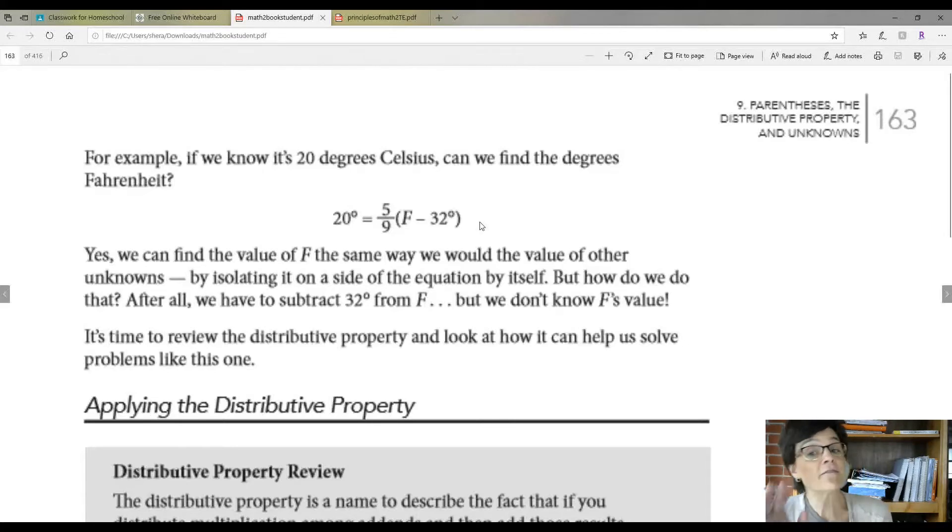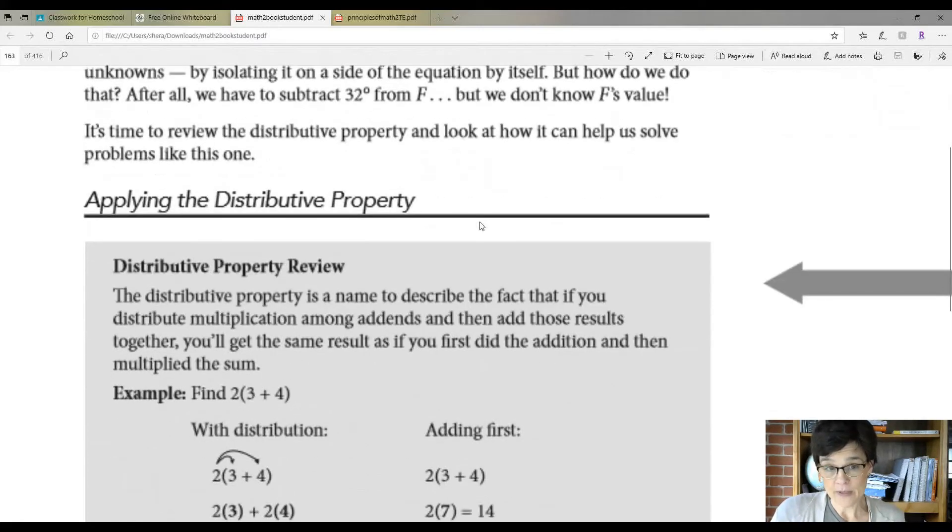Yes, you can find the value of F the same way that you would find any other unknown by getting it on the side by itself. But how do you do that? After all, you have to subtract 32 degrees from F, but we don't know F's value. So it's time to review the distributive property and look at how it can help us.